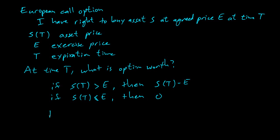The payoff is the value of the option at expiration. You can write it mathematically as max of S of T minus E comma zero. If S of T is larger, this is positive. If S of T is less than E, this goes negative but the max with zero gives zero.